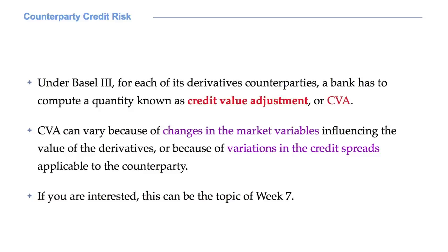Then we have counterparty credit risk. Under Basel 3, for each of its derivatives counterparties, a bank must compute a quantity known as credit value adjustment, or CVA. The value of CVA can vary because of changes in the market variables influencing the value of the derivatives, or because of variations in the credit spreads that are applicable to the counterparty. This is an interesting, even if not trivial, topic. If you want, it can be the topic of week 7.